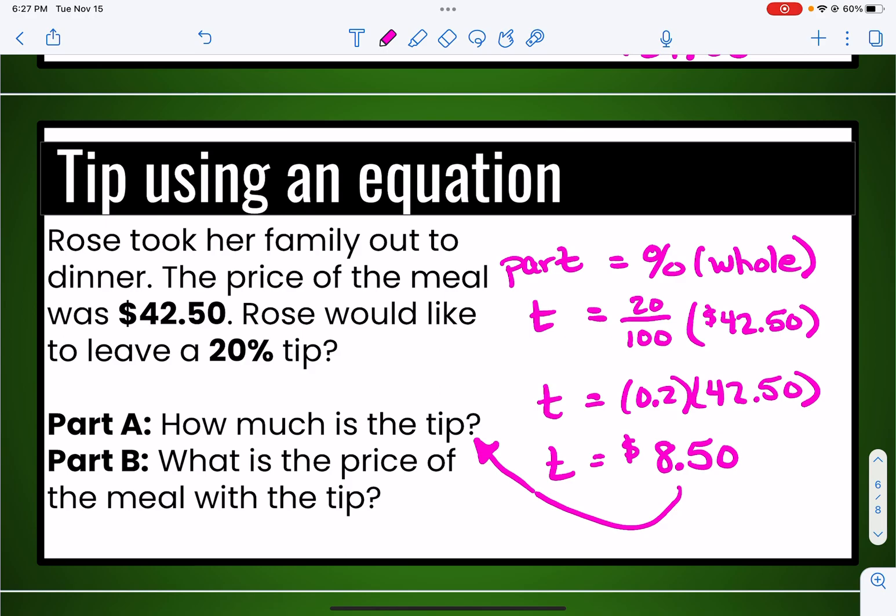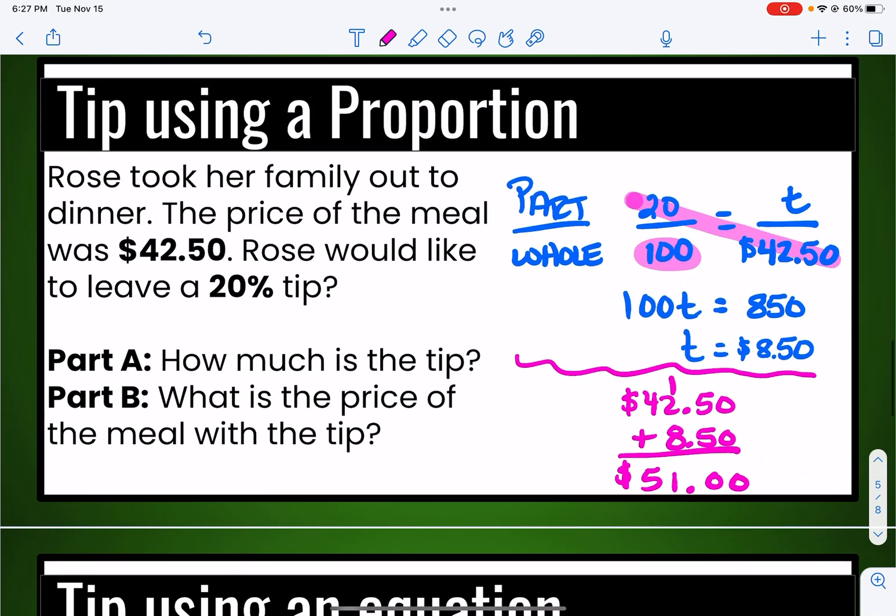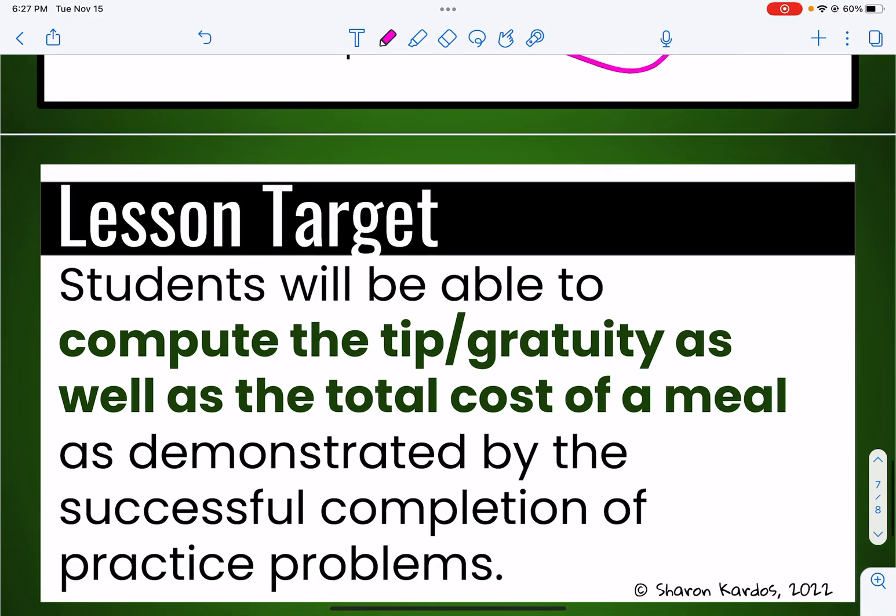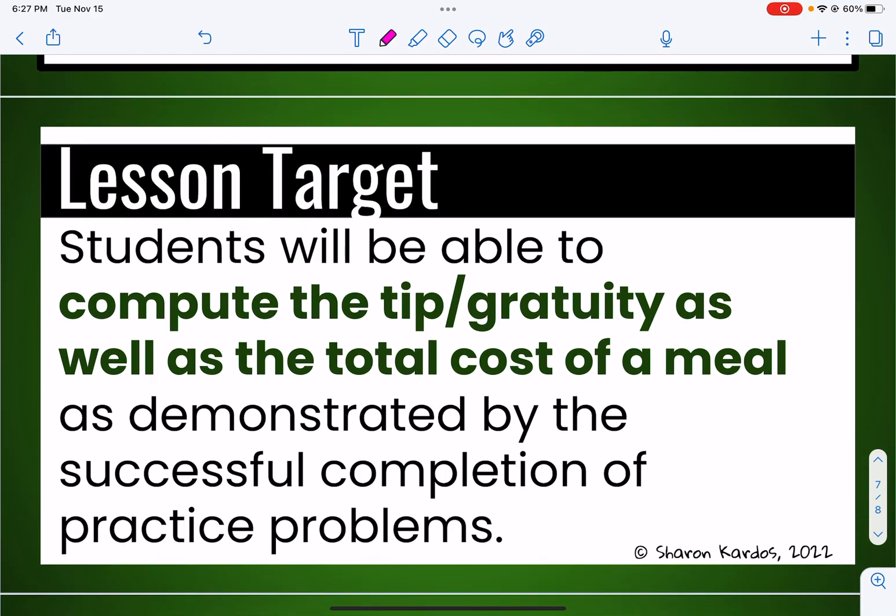So there you have it. Two different ways of solving a tip or gratuity problem. I can use a proportion or I can take my percent and change it to a decimal and multiply it, which is by using an equation. So we were able to compute the tip or the gratuity as well as the total cost of the meal.